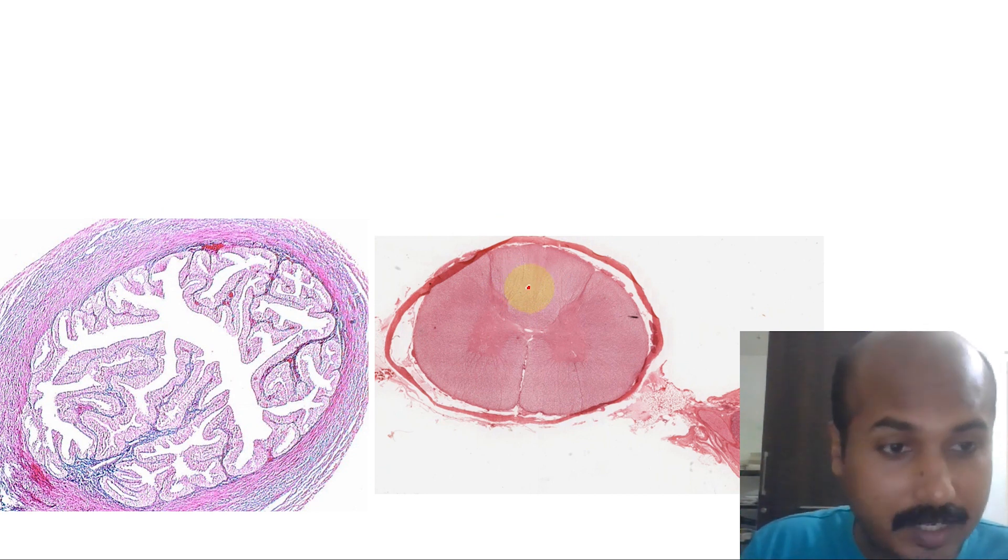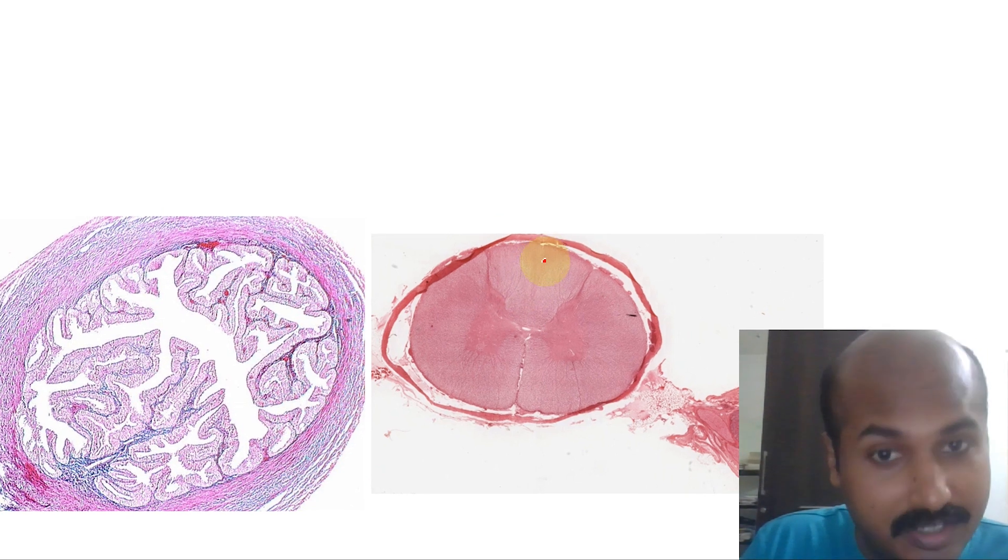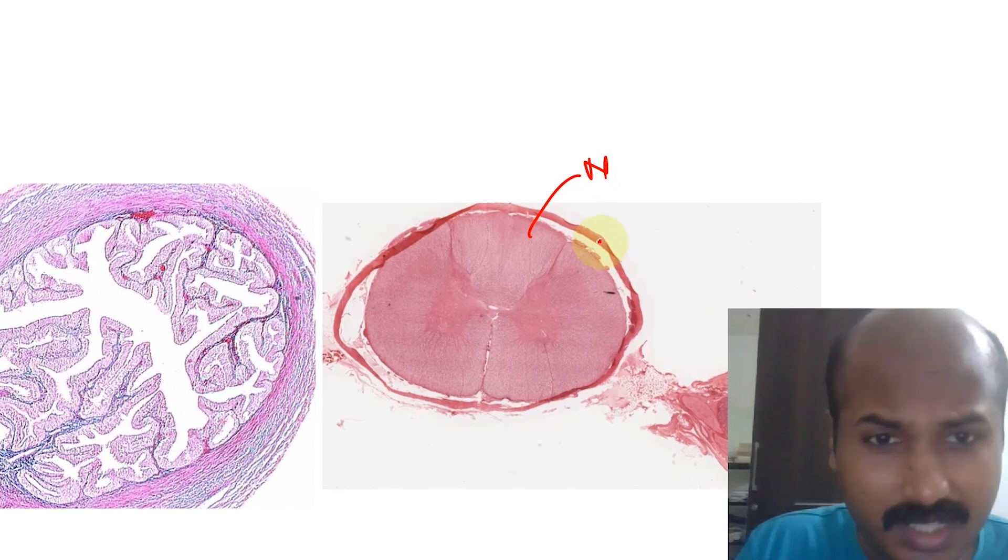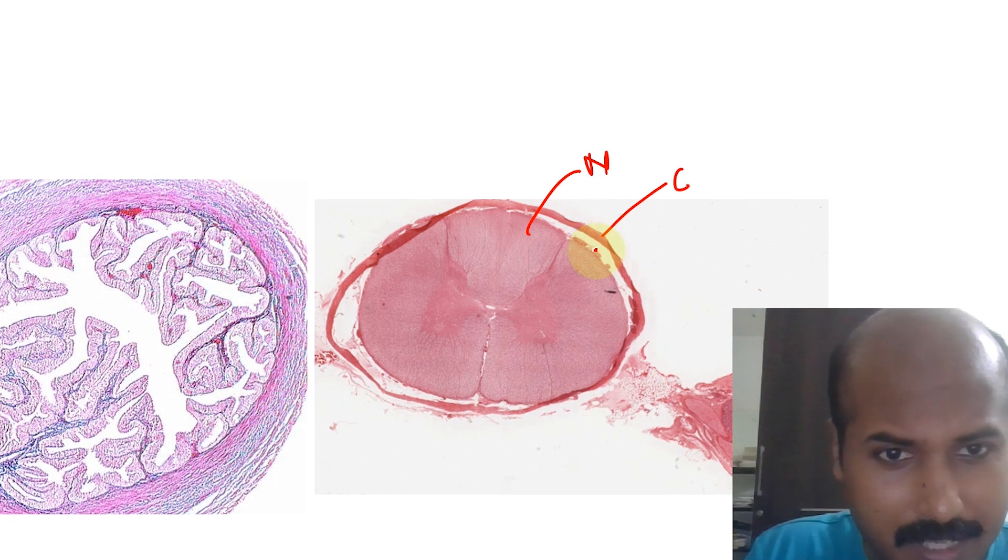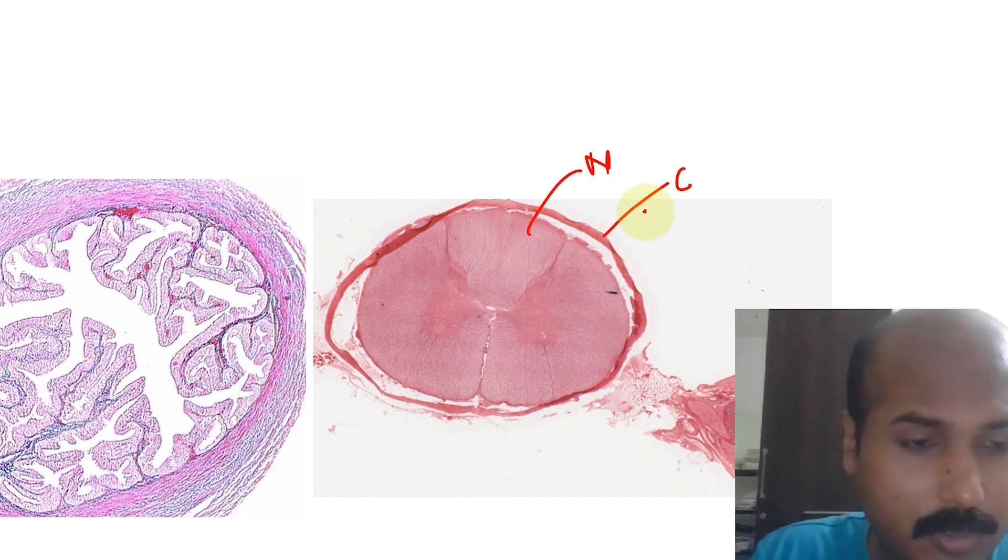If you take spinal cord, it contains mostly nervous tissue. All this is nervous tissue. There's a little bit of connective tissue over here. This is dura mater, this will be pia mater, this will be arachnoid. So that will be connective tissue.